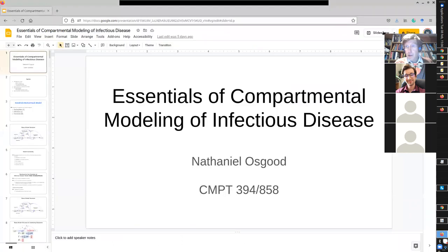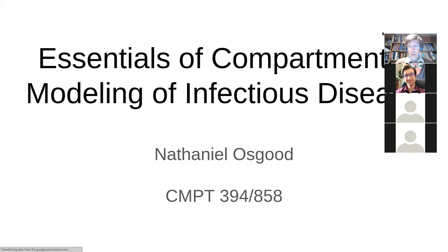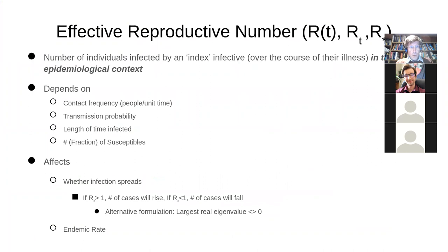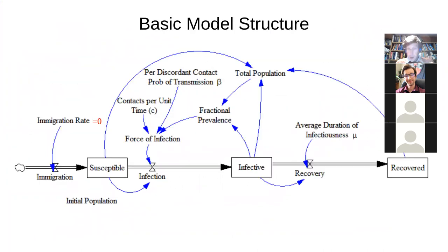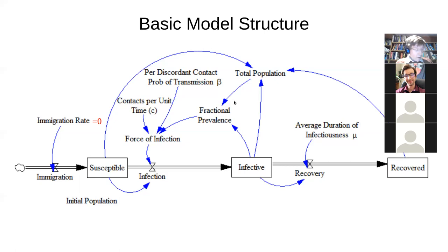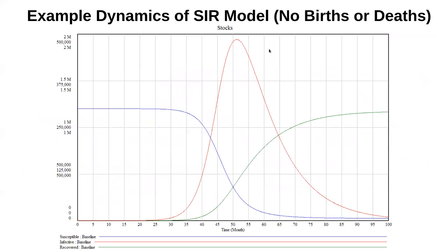We're going to be talking about models where infections remain present either because they recirculate or because there's an ongoing population which feeds them fuel. We've been talking about models with closed populations — populations where we don't have births, deaths, or immigration, and there's no recirculation. An example is shown here: the SIR model, where infections rise rapidly and reach a crest.